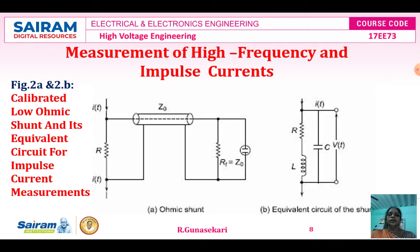Figure 2A shows the basic circuit of the ohmic shunt, that is the resistive shunt. Figure 2B represents the equivalent circuit of the resistive or ohmic shunt. The basic circuit consists of resistance R, surge impedance Z₀, and termination resistance r_i. The equivalent circuit shows an RLC network with V(t) and I(t).